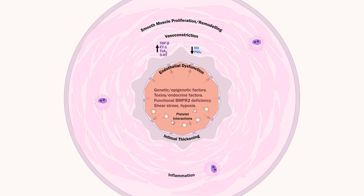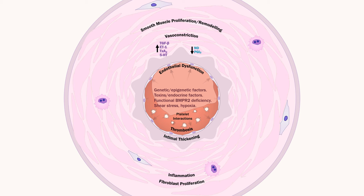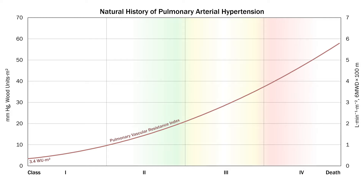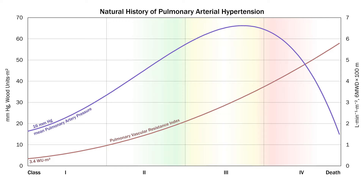Next comes smooth muscle proliferation, remodeling, inflammation and thrombosis, fibroblast proliferation, and intimal thickening, progressing to irreversible remodeling, generation of plexiform lesions, obliteration of blood vessels, and a progressive rise in pulmonary vascular resistance. This is the typical progression for a hypothetical patient with pulmonary arterial hypertension. The PVRI values are a little higher than before because they're indexed and therefore multiplied by body surface area. You can actually see the pulmonary artery pressure rise and then fall because as the disease progresses, you'll start to see a drop in cardiac index.